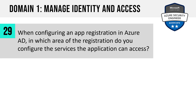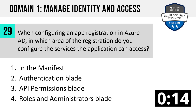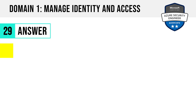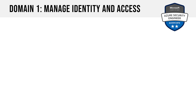Question 29. When configuring an app registration in Azure AD, in which area of the registration do you configure the services the application can access? The manifest, the authentication blade, the API permissions blade, or the roles and administrators blade? The answer is three: the API permissions blade. You can choose add a permission in the API permissions blade to add those accessible services. App registration is definitely one of the most common areas exam candidates see questions from.